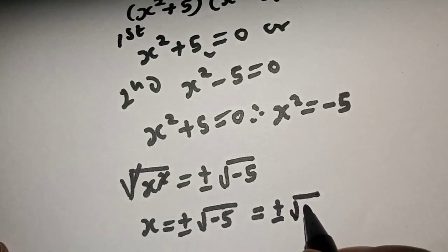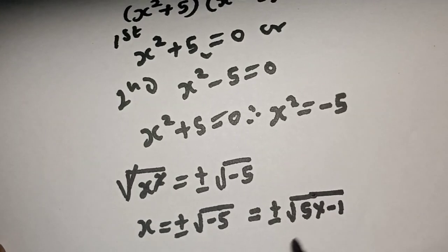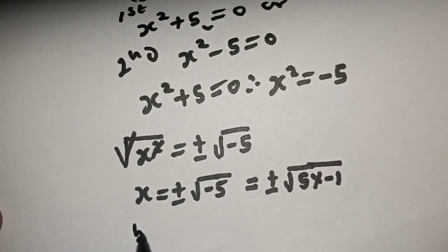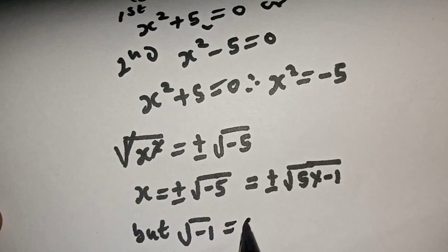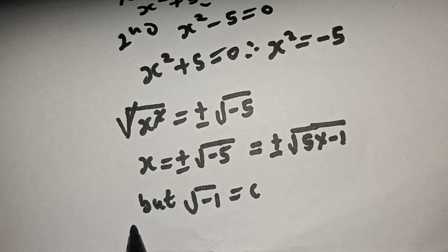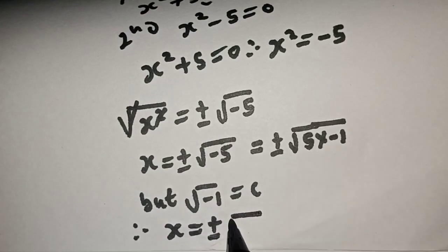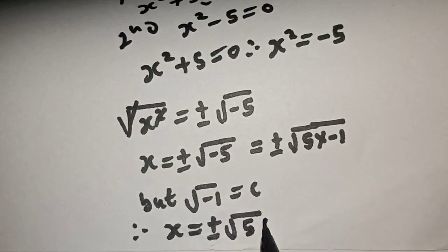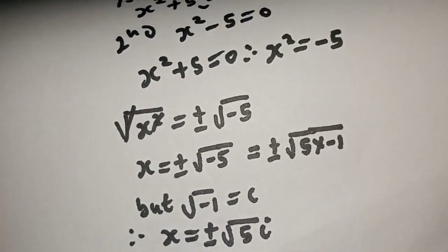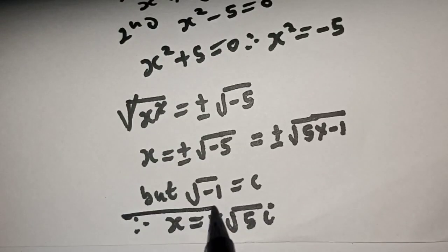This is equal to plus or minus square root of 5 times i. This is the first value of s.